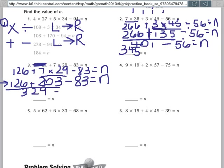And then the rest of my problem I just copy down the way that it was. So I have minus 83 equals n. Now I only have one problem left. 329 minus 83. 329 minus 83 is 246. So my n equals 246.